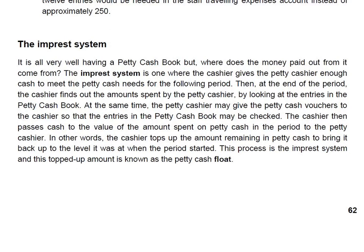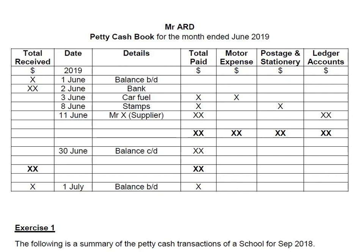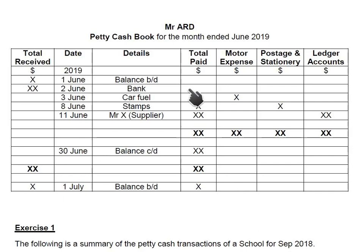Now let us discuss the format for the petty cash book. Although this format would be given to you in the examination question — the lines, columns, and rows — you need to make the headings. There are two sides of a petty cash book. We write the heading: the name of the owner, then 'Petty Cash Book for the month ending' — normally we make a petty cash book for each month. The debit side is known as 'total received' and the credit side is 'total paid.'